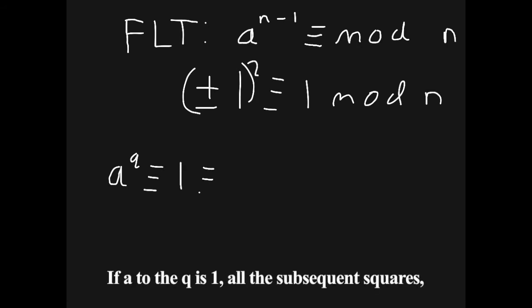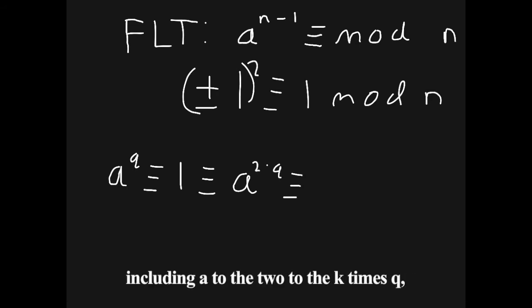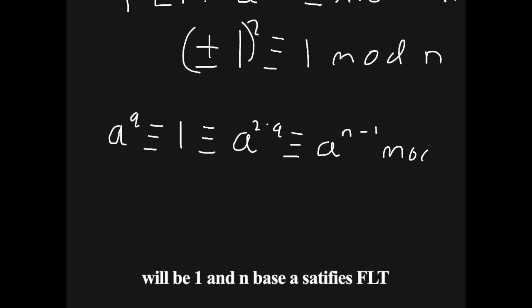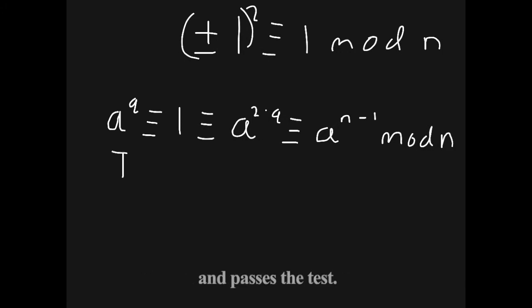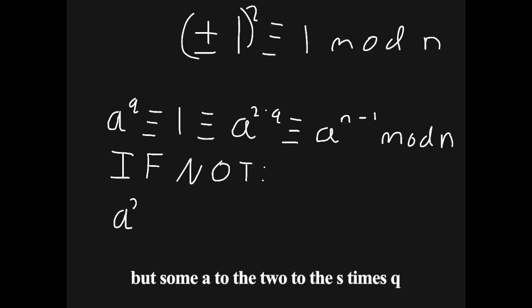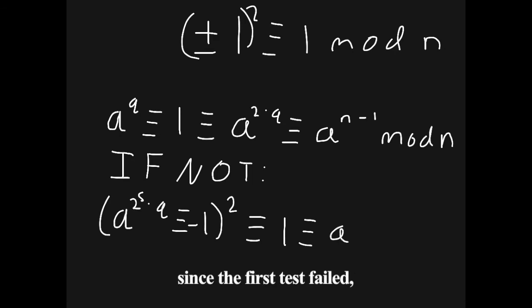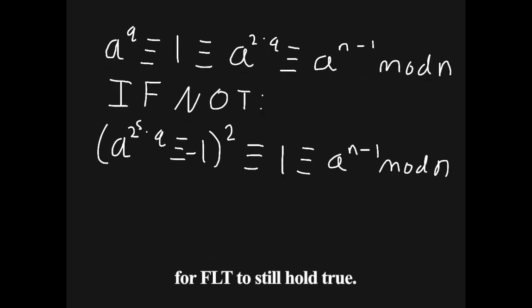If a to the q is 1, all the subsequent squares, including a to the 2 to the k times q, which is a to the n minus 1, will be 1, and n base a satisfies FLT and passes the test. If a to the q is not equal to 1, but sum a to the 2 to the s times q equals negative 1, all subsequent squares are 1, and n still passes. We don't check if it equals 1 since the first test failed, which ensures that this is the only way for FLT to still hold true. If neither test passes, a to the n minus 1 is not equal to 1 mod n, and therefore n must be composite.